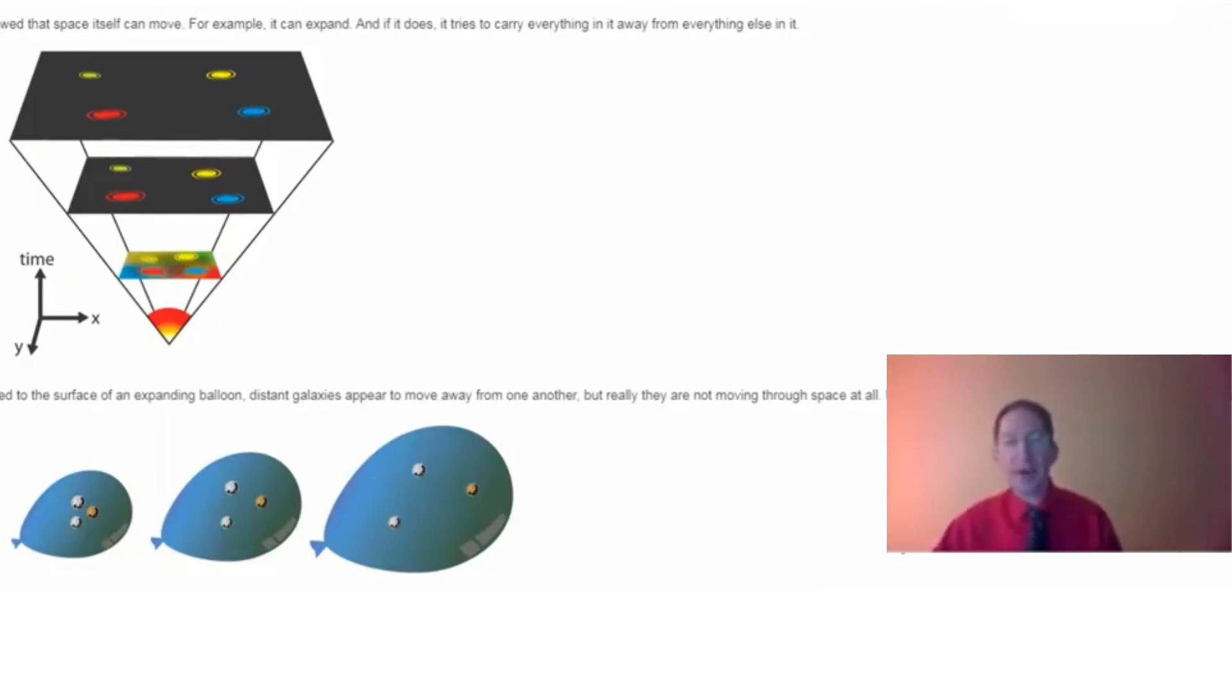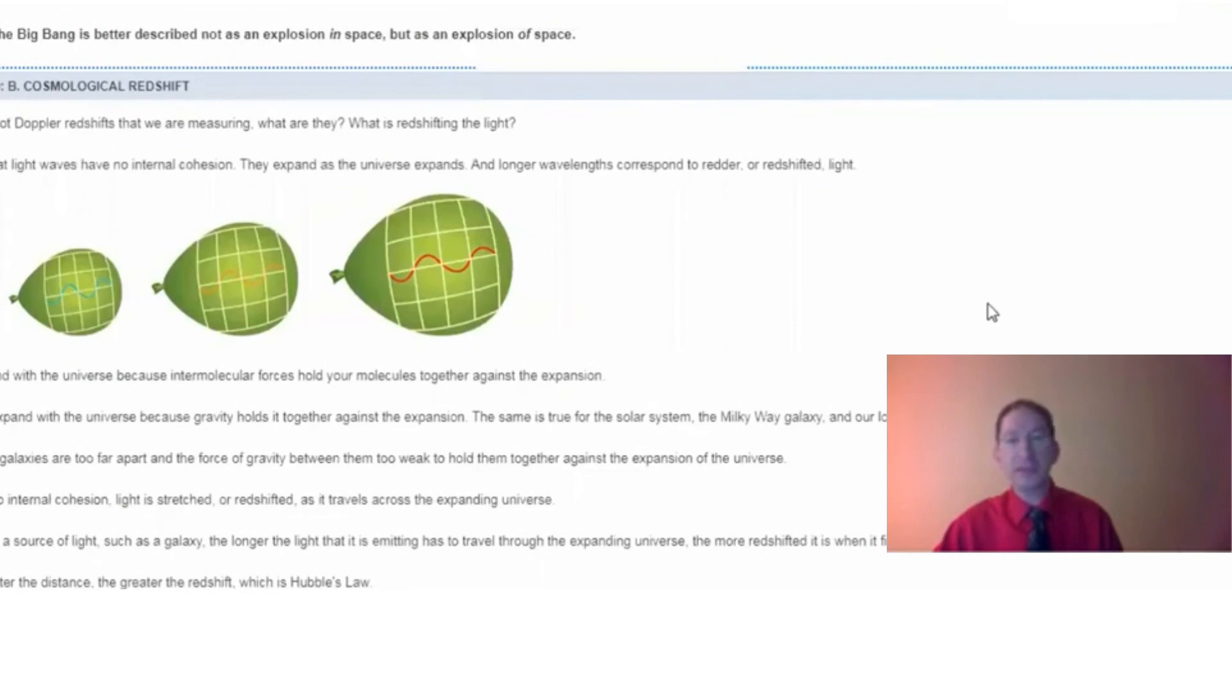Okay, let's take a look at our last background section on cosmological redshift. So if this is not motion through space, there can't be a Doppler effect. The Doppler effect is produced by objects moving through space. So if these are not Doppler redshifts, what are we measuring? And the answer has to do with light and the fact that light has no internal cohesion. As the universe expands, so does any light that happens to be traveling through it. And as light is stretched out to longer and longer wavelengths, it becomes redder and redder in color.